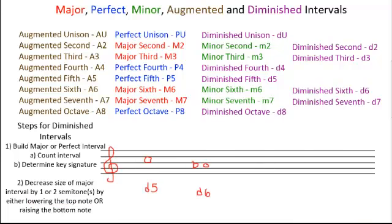Now we're going to try some descending diminished intervals. The first step is to build the major or perfect interval. Counting down five from C, we write in an F. We take the key signature of the bottom note — for descending it's a bit of trial and error. We try F major first; F major has one flat, B flat. Those two notes match the key signature, so now we change it by raising the bottom note, because for descending intervals we can only change the bottom note. We raise that F by one semitone to an F sharp, because it's a perfect interval. By raising it, we make the distance smaller, making it diminished.